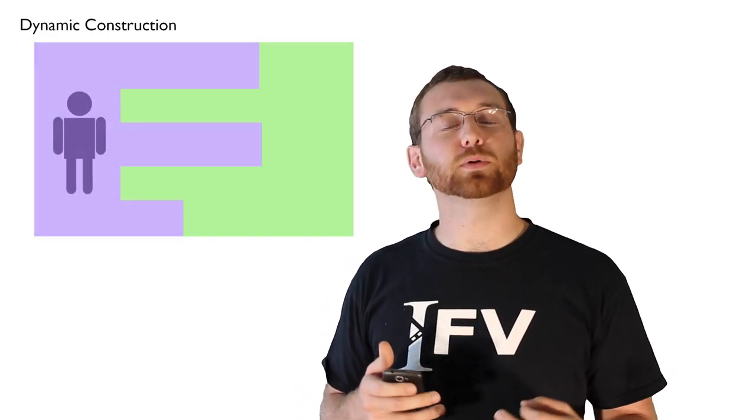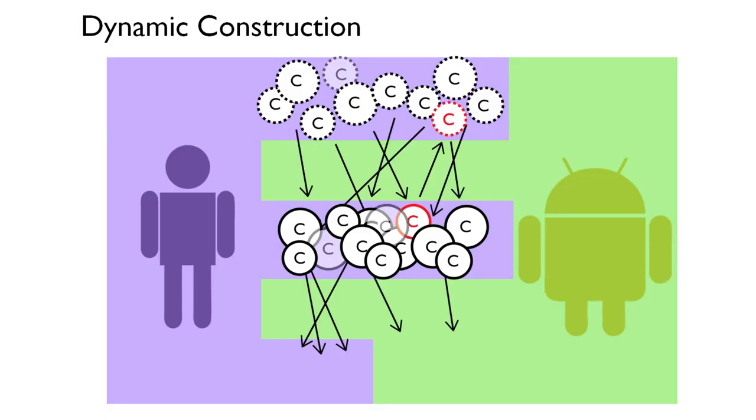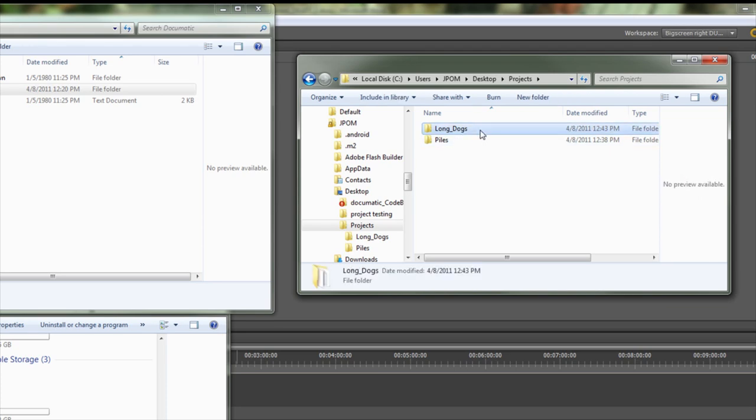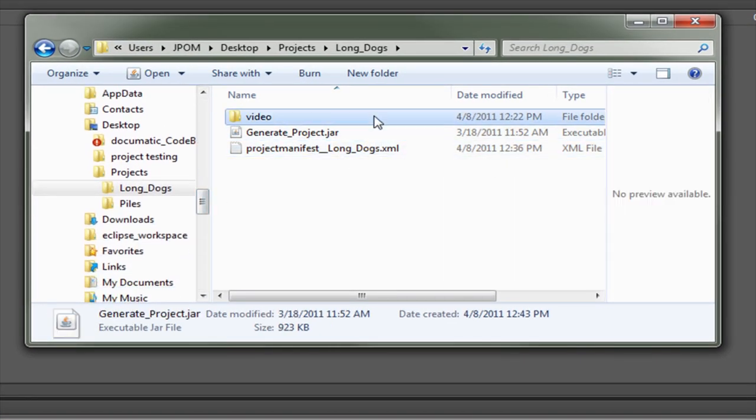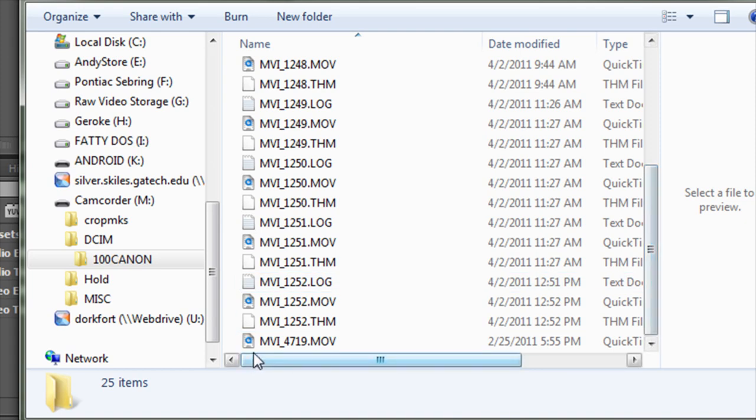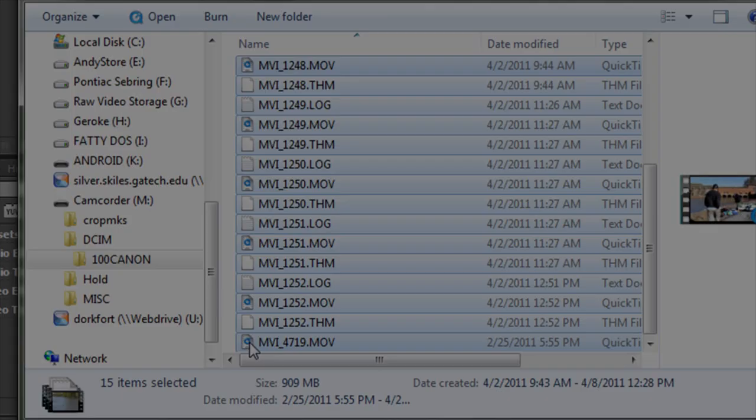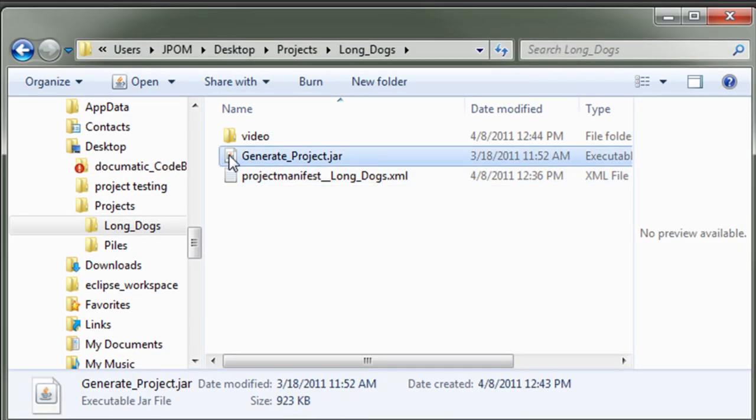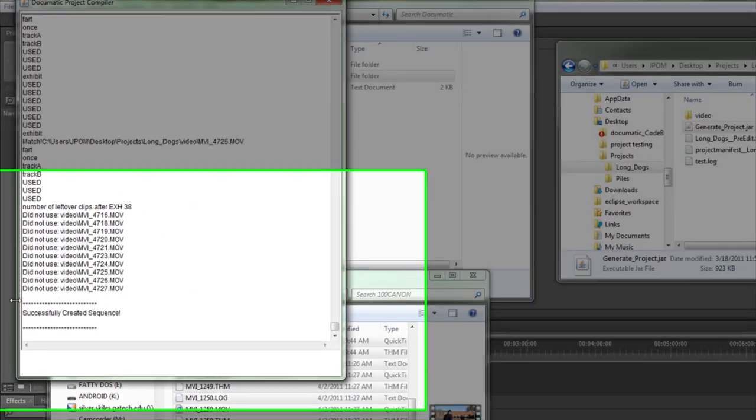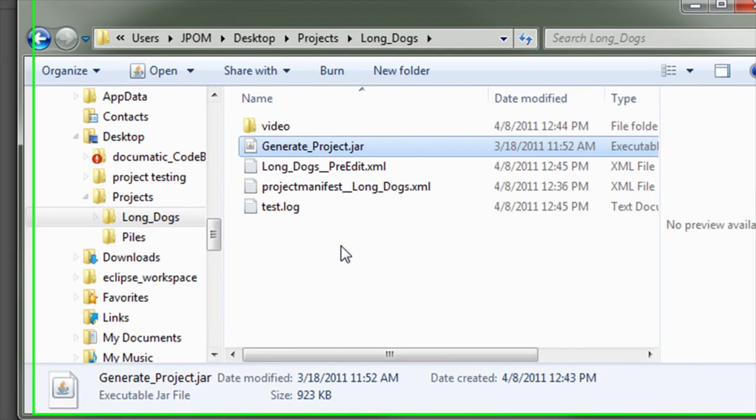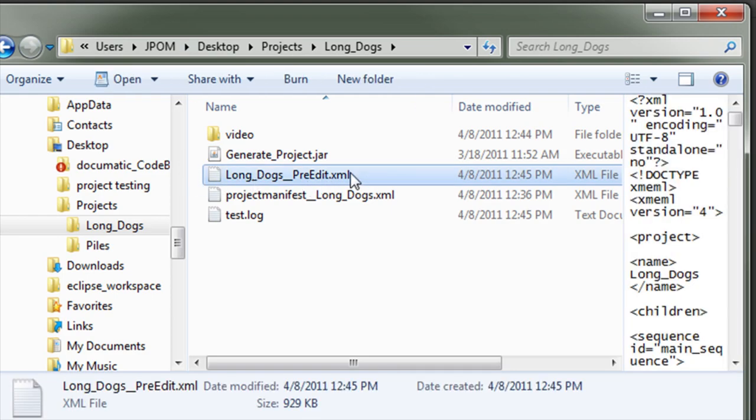Whether the team is prepared to produce a finalized, distributable video, or they simply want to get a quick feel for how the video is coming along, the post-production process is made much simpler with the Documatic system. The documentarian simply copies the project folder from the Android device to the editing computer, and then dumps all of the raw video footage that was gathered into this project's video directory. Then, when they double-click the project generator, a new pre-edited rough cut sequence is intelligently generated.